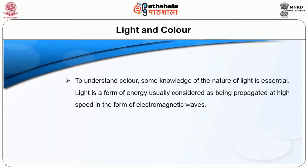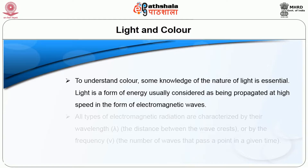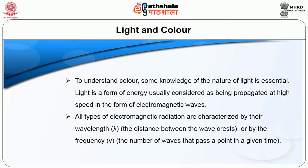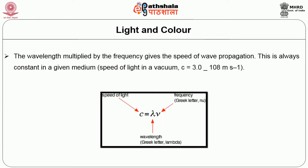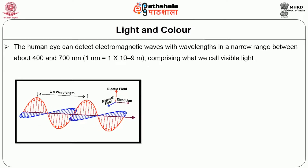To understand color, some knowledge of the nature of light is essential. Light is a form of energy usually considered as being propagated at high speed in the form of electromagnetic waves. All types of electromagnetic radiation are characterized by the wavelength or by the frequency. The wavelength multiplied by the frequency gives the speed of wave propagation, which is always constant in a given medium. The human eye can detect electromagnetic waves with wavelengths in a narrow range between 400 and 700 nm, comprising what we call visible light.